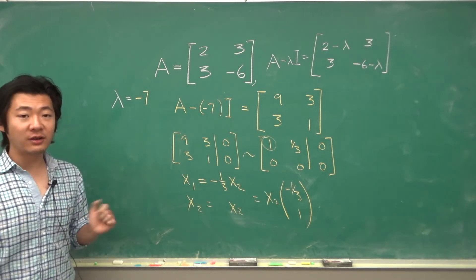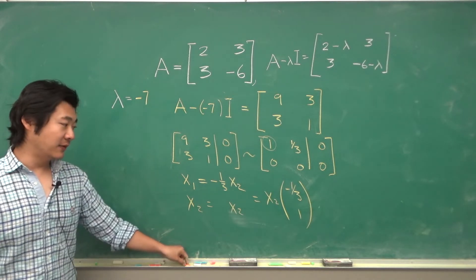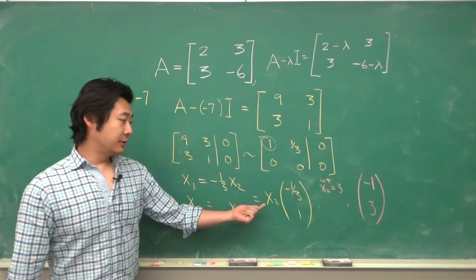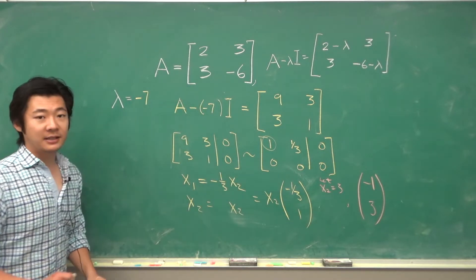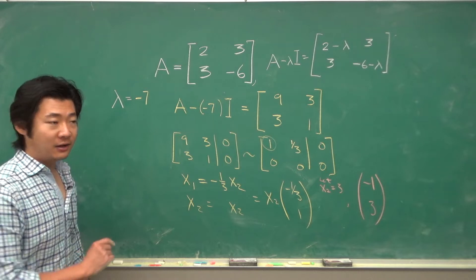And remember x2 is a free variable. So let's just pick a convenient x2 like 3. So when you plug in x2 equals 3 you'll get the vector negative 1, 3. And let's test if this is an eigenvector.